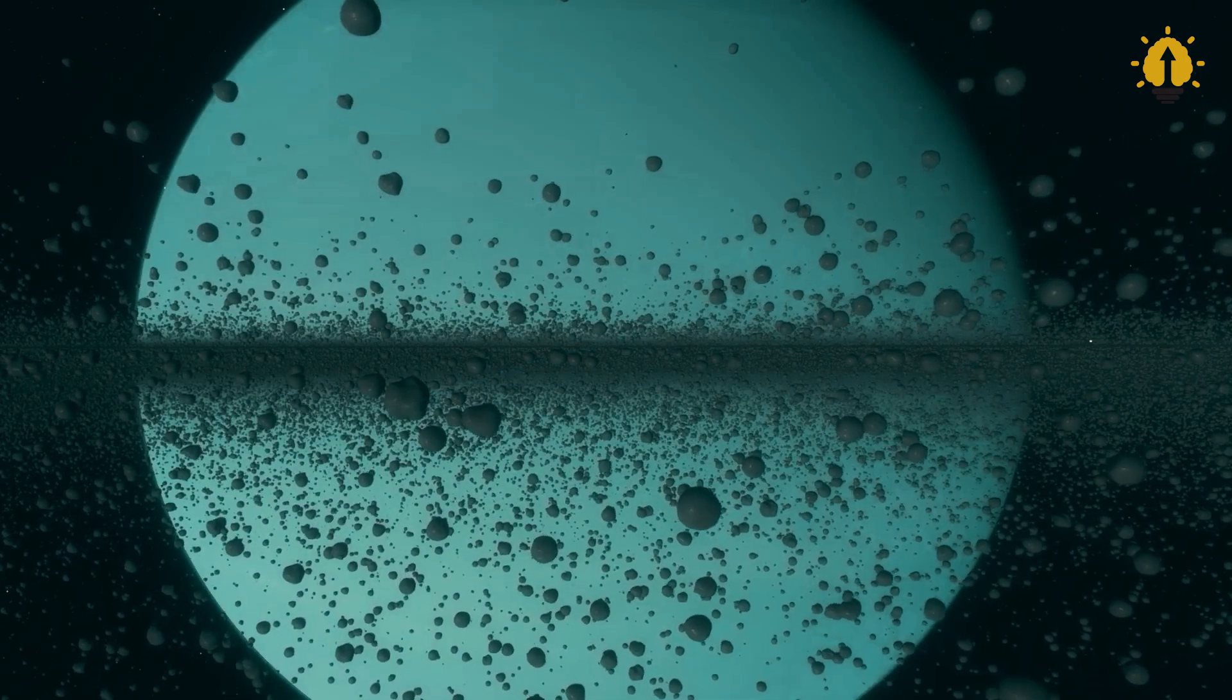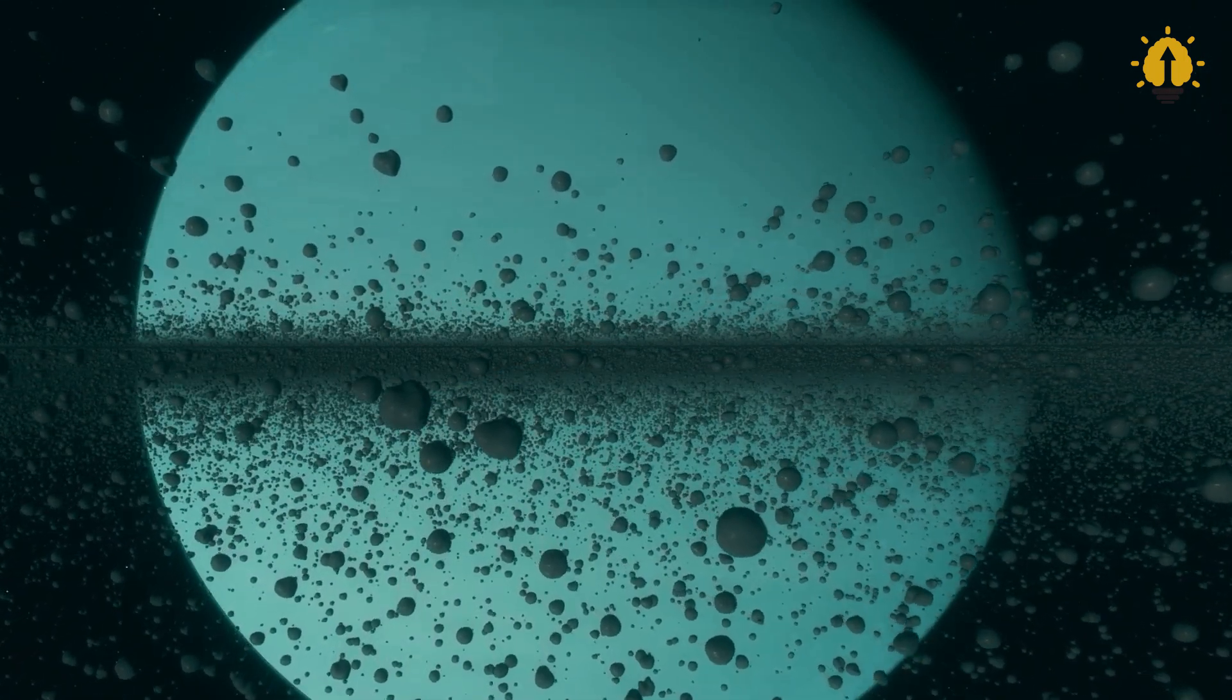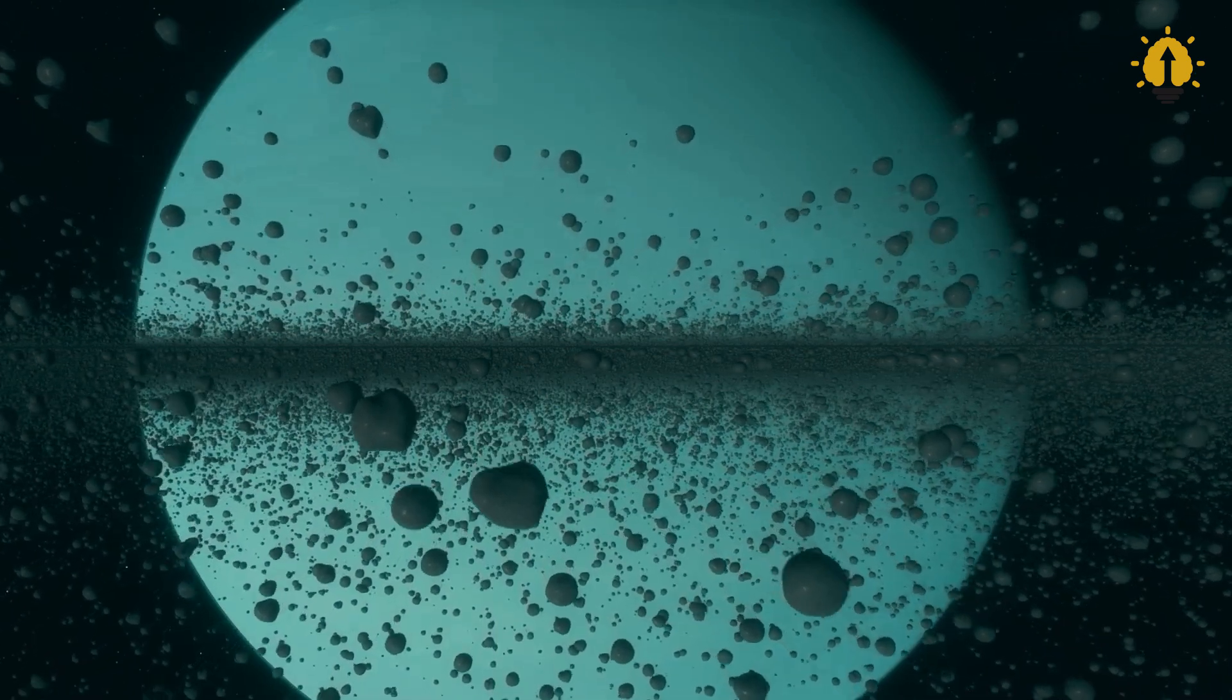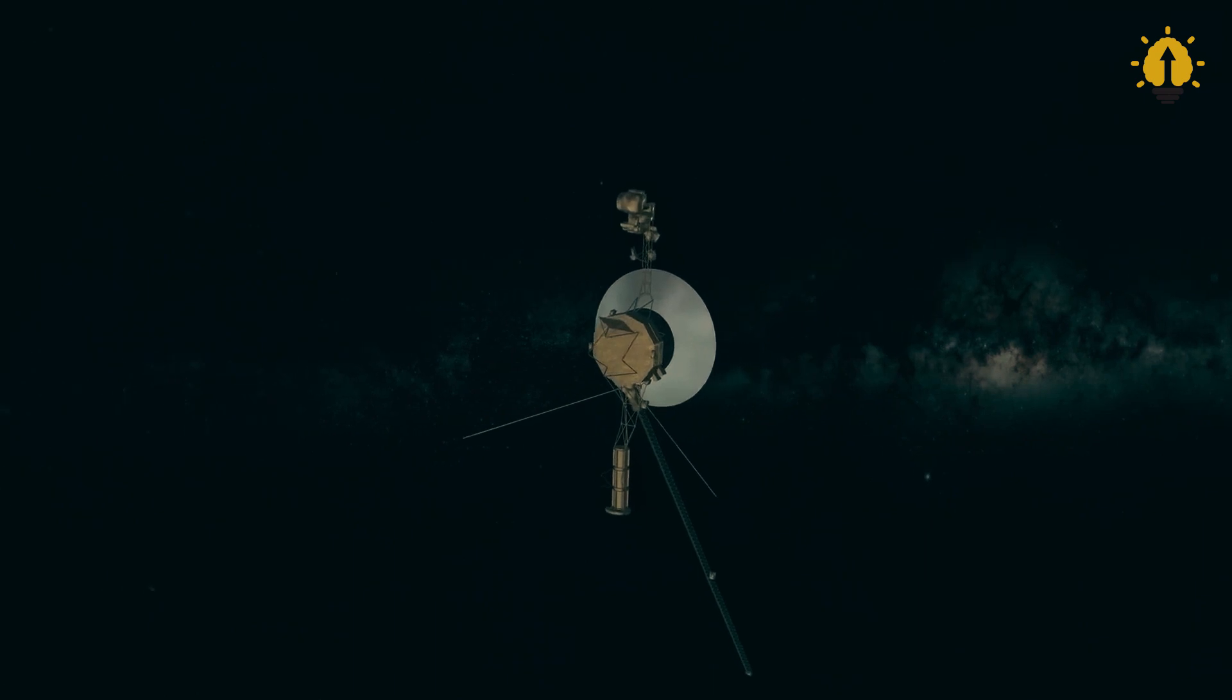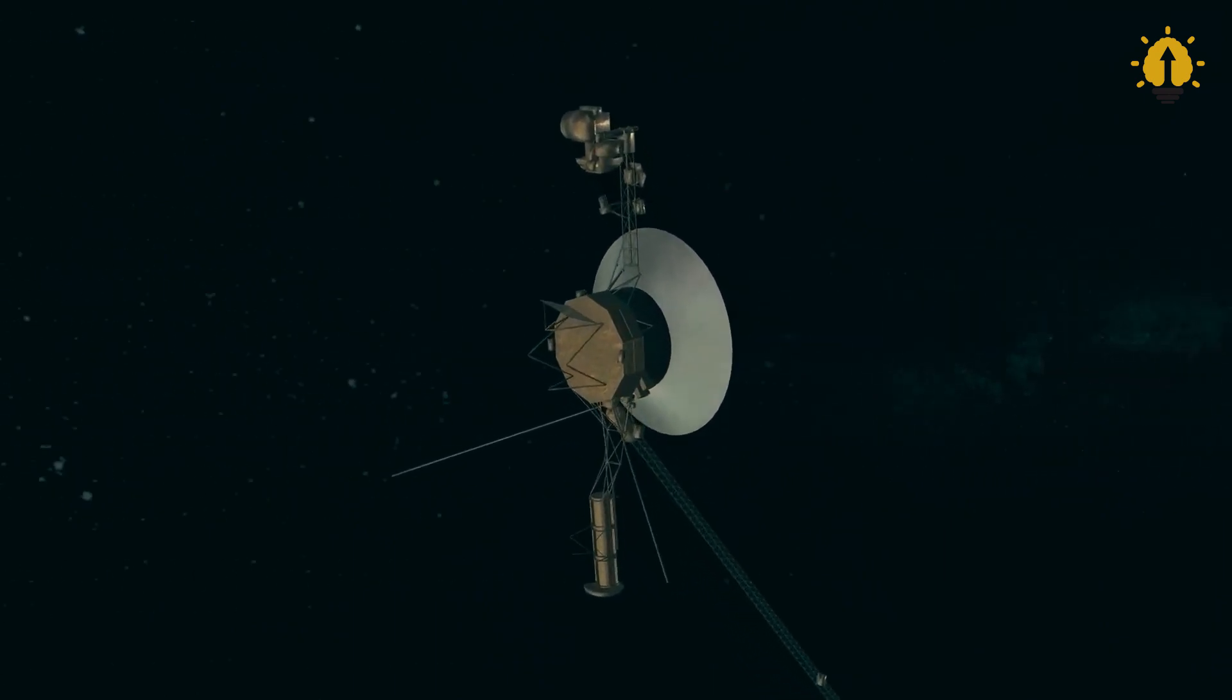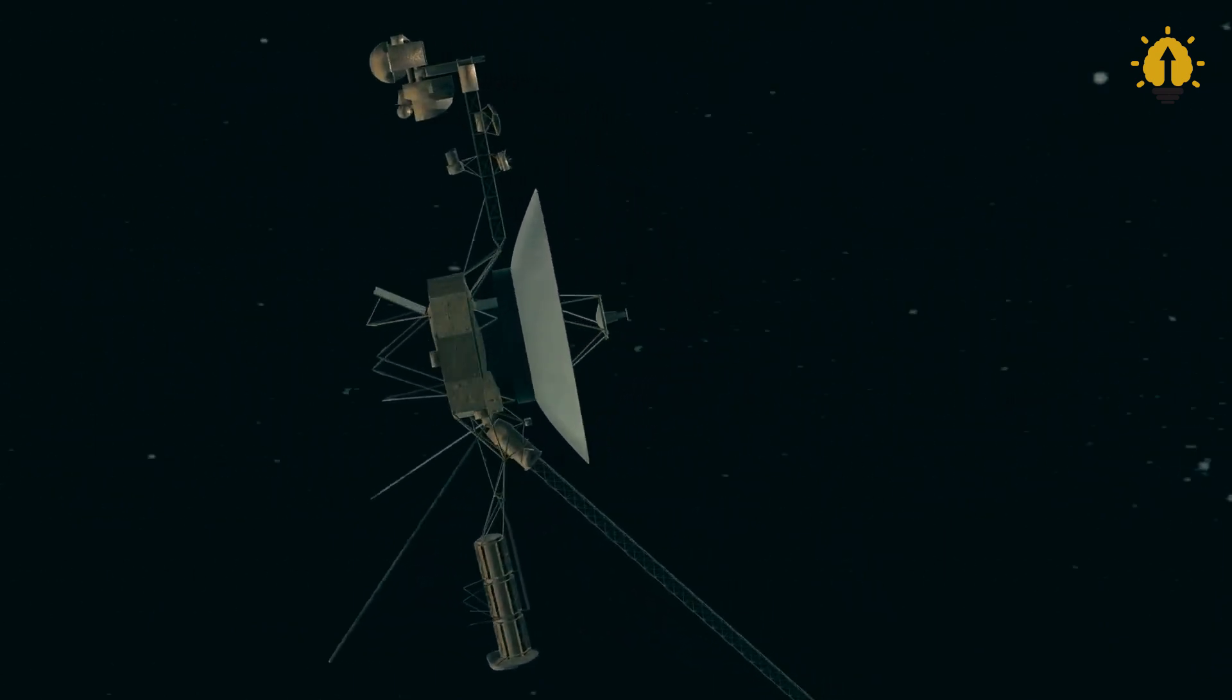Along its journey, it leaned on gravitational boosts from Jupiter and Saturn to propel it further into the cosmos. When it finally approached Neptune in August 1989, it made history by becoming the sole spacecraft to explore this distant giant close up.